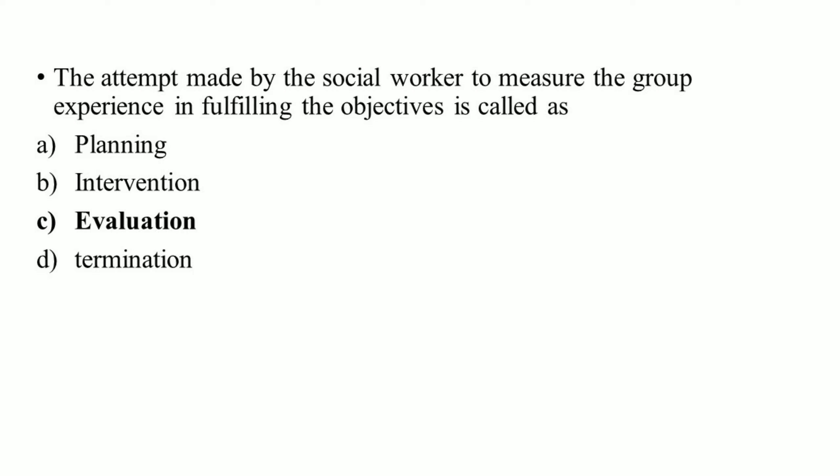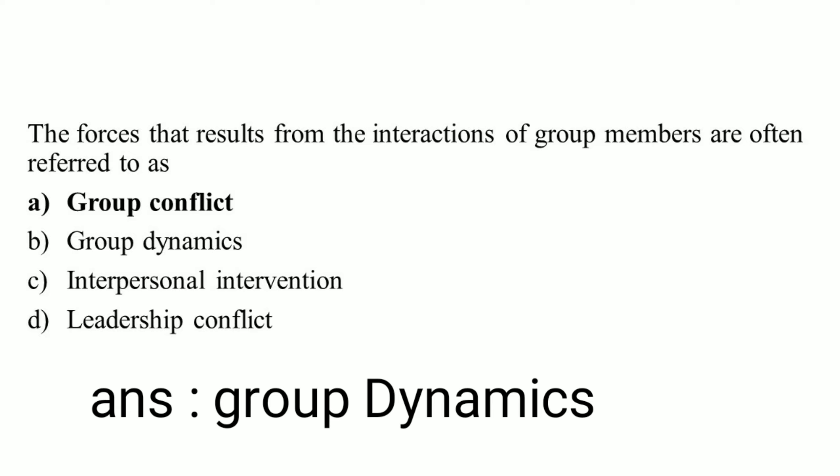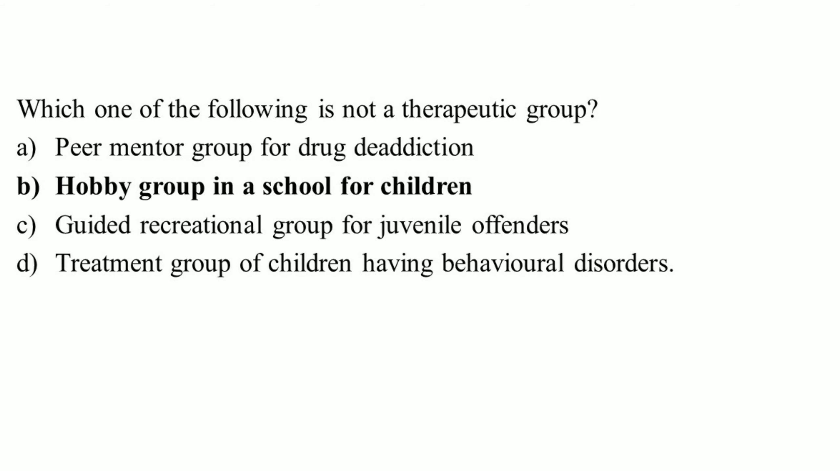The attempt made by the social worker to measure the group experience in fulfilling the objectives is called: right answer option C, evaluation. The forces that result from the interaction of group members are often referred to as: right answer option B, group dynamics. Which one of the following is not a therapeutic group? Right answer: option B, hobby group in a school for children.